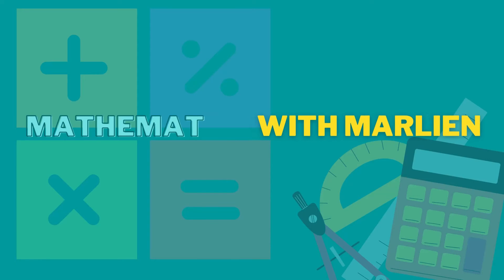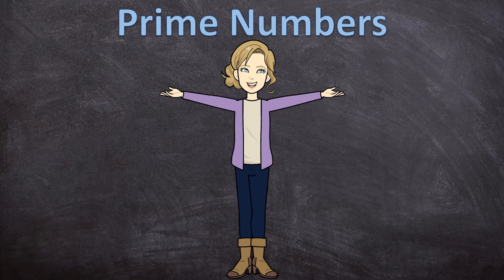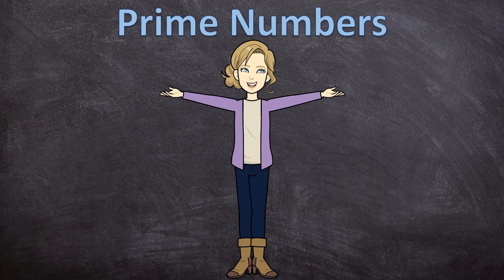Hello everyone and welcome to Mathematics with Marlene. In today's video we'll be looking at prime numbers — what prime numbers are, what composite numbers are, and also what type of number 1 is. And then lastly we will find all the prime numbers between 1 and 100 in a quick and easy way. So let's start.